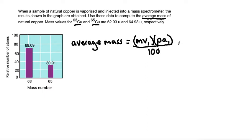And we do that for each one of our isotopes. So that would be plus the mass value of isotope 2 times the percent abundance for isotope 2, divide that also by 100, and then we continue adding until we have all of the isotopes.